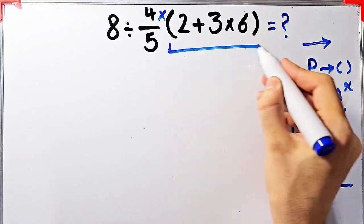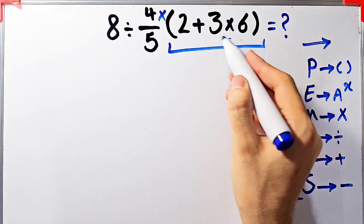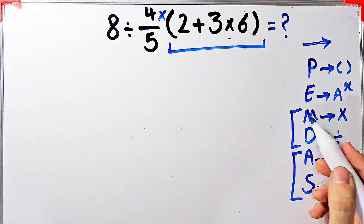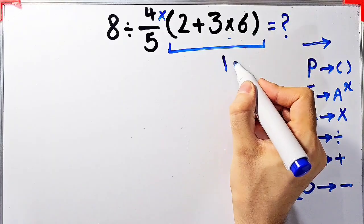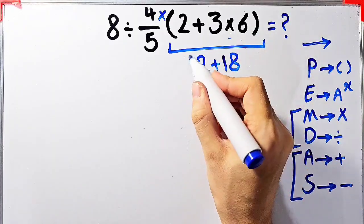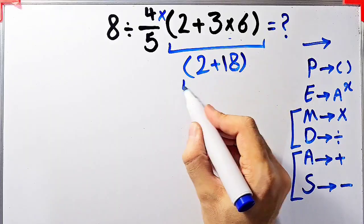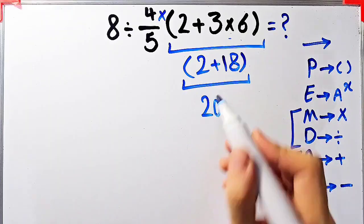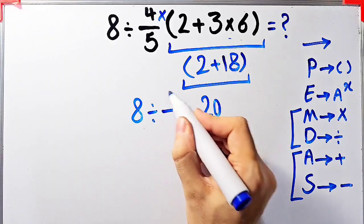According to the PEMDAS rule, first we simplify the parentheses. Inside the parentheses we have addition and multiplication. First we do the multiplication because multiplication has a higher priority than addition. 3 times 6 equals 18. Now we have 2 plus 18 inside the parentheses, and 2 plus 18 equals 20.